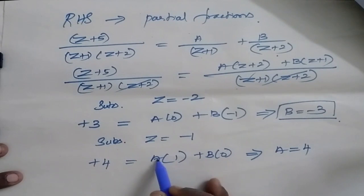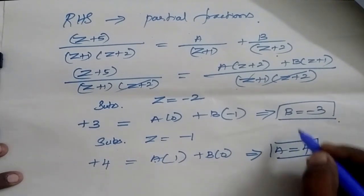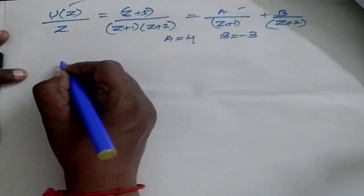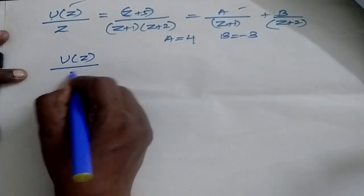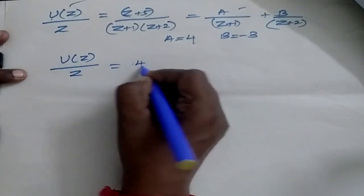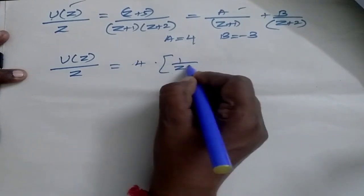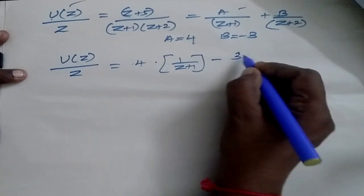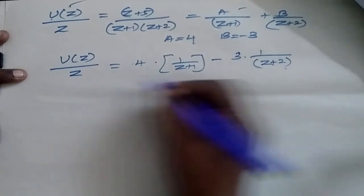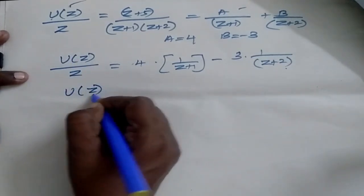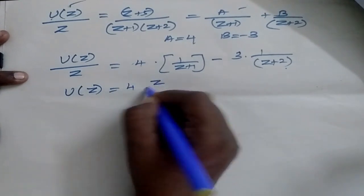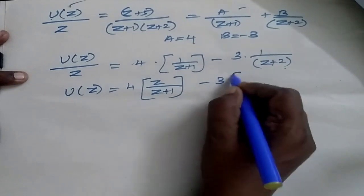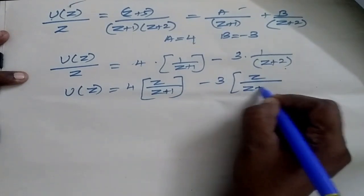Now I am going to substitute the values of A and B. So my U(z)/z is equal to 4 times 1/(z+1) minus 3 times 1/(z+2). So now my U(z) is equal to 4 times z/(z+1) minus 3 times z/(z+2).